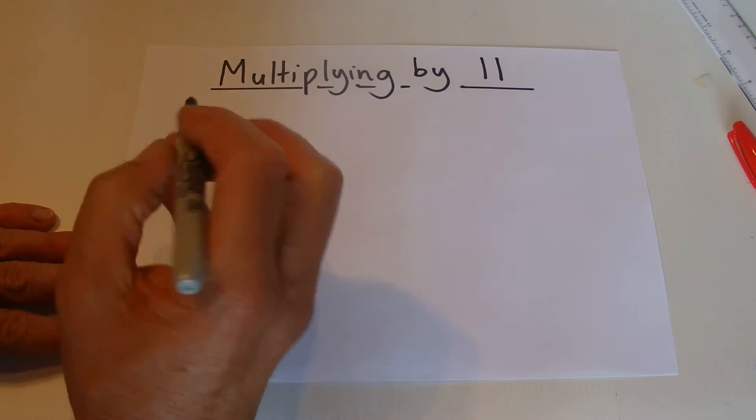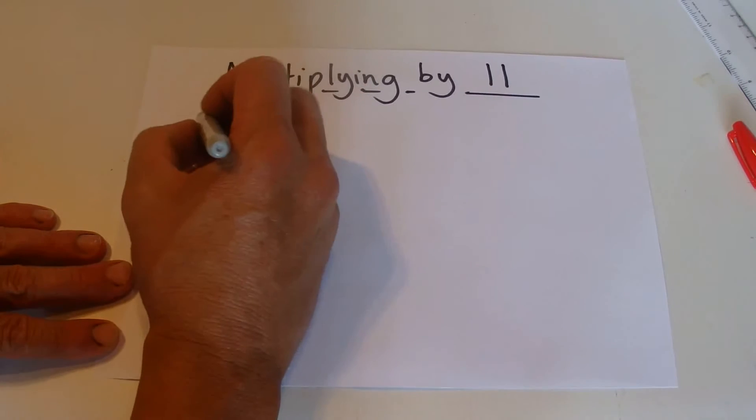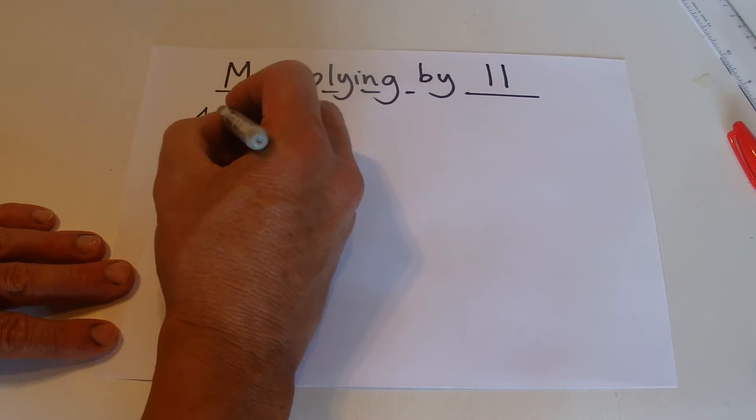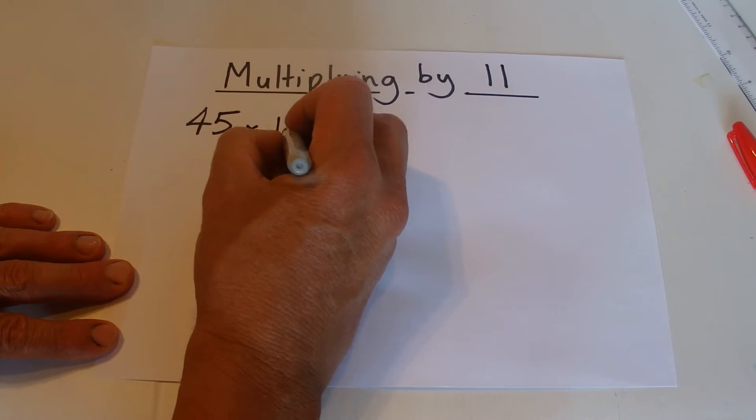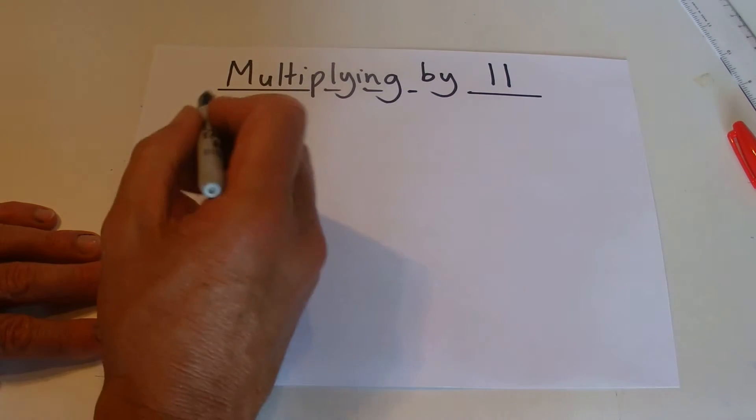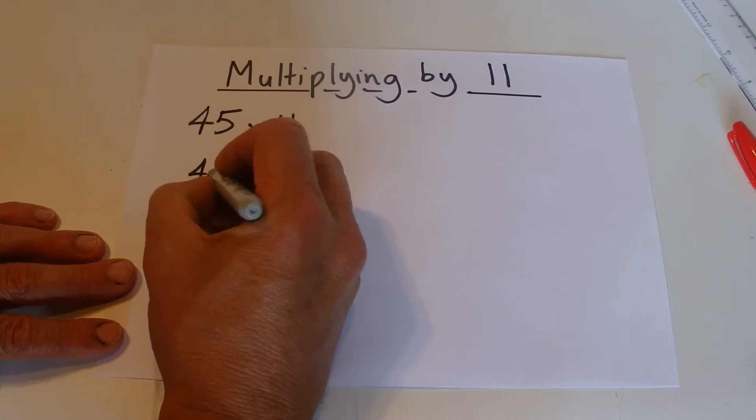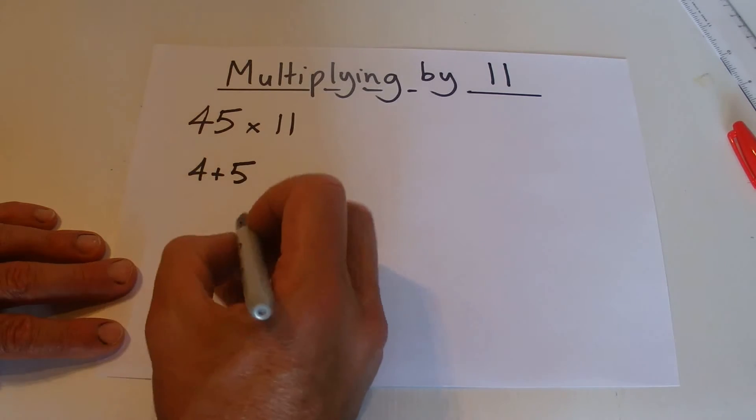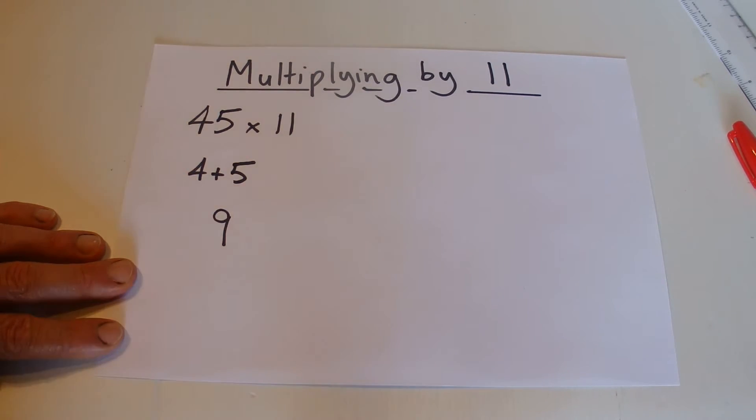And the trick, I'll show you how it works. So say for instance you want to multiply 45 times 11, then the first thing you do is add the 4 and the 5 together of the 45, 4 plus 5, and that equals 9.